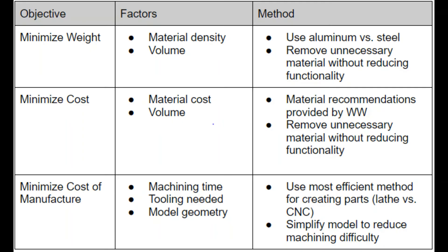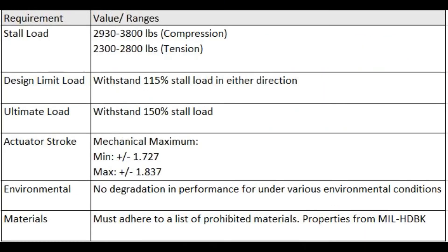Here we have the objectives and constraints for the actuator. As with many aerospace systems, it is important to minimize weight and cost while preserving manufacturability. Load requirements feature a maximum functional load of 3800 pounds in compression and 2800 pounds in tension. Ultimate load is not to exceed 150% of that. There are also requirements for actuator stroke, environmental durability, and material use.